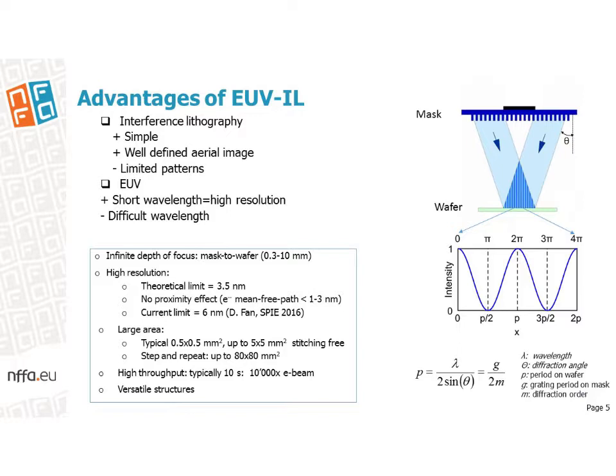This technique has infinite depth of focus, which means that the aerial image is insensitive to distance variation between the mask and the wafer — a critical issue for projection lithography. As opposed to serial writing techniques such as electron beam lithography, this is a parallel writing method, which means that all patterns are written in a single exposure, increasing the throughput dramatically. A pattern as large as 25 mm² can be written in a single exposure, making it possible to cover large areas by step and repeat.